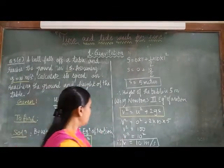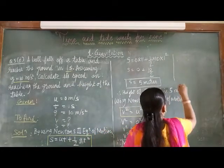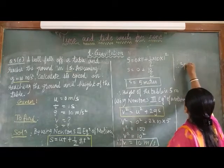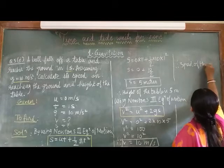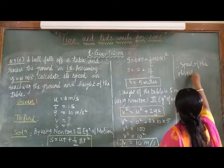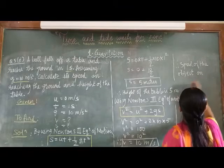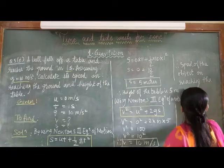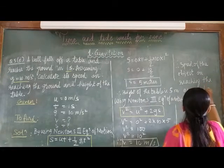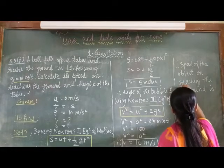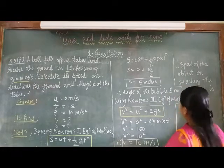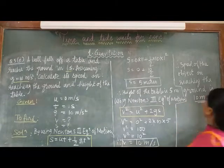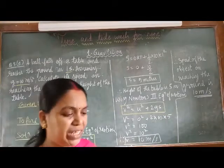That is, the speed of the object on reaching the ground is 10 meters per second. Question number 5 F.